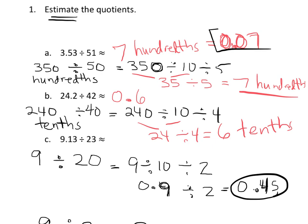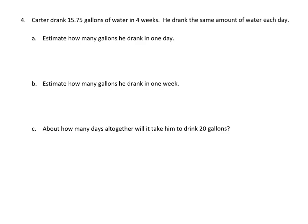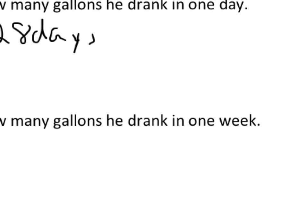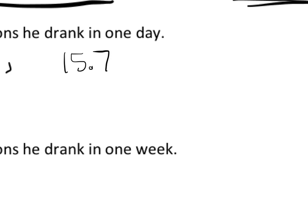Remember, these are all estimations. If students get a slightly different answer based on a different way of rounding initially, that's perfectly fine. Our last problem is a word problem: Carter drank 15.75 gallons of water in four weeks, drinking the same amount each day. Estimate how many gallons he drank in one day. Four weeks equals 28 days, so we're doing 15.75 divided by 28.